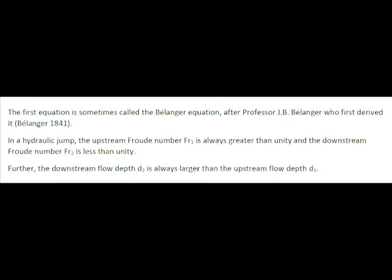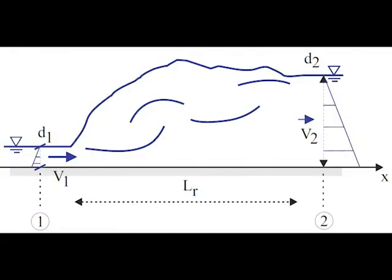For a hydraulic jump, the upstream Froude number is always greater than unity, and the downstream Froude number is less than 1. The downstream depth is further greater than the upstream flow depth.